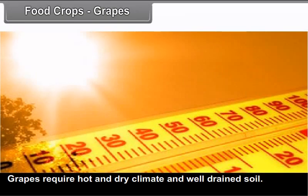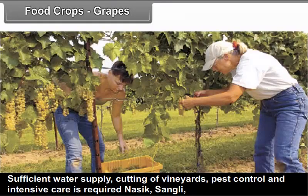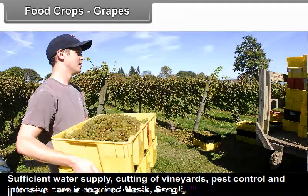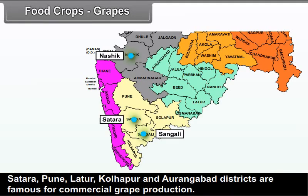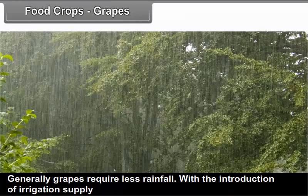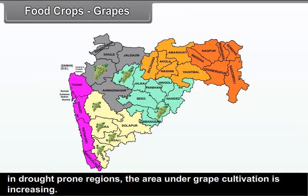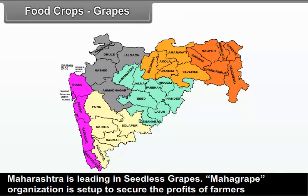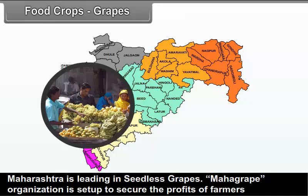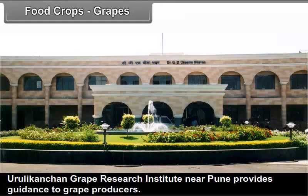Grapes: Grapes require hot and dry climate and well-drained soil. Sufficient water supply, cutting of vineyards, pest control, and intensive care are required. Nashik, Sangli, Satara, Pune, Latur, Kolhapur, and Aurangabad districts are famous for commercial grape production. Grapes generally require less rainfall. With the introduction of irrigation in drought-prone regions, the area under grape cultivation is increasing. Maharashtra is leading in seedless grapes. Mahagrape organization is set up to secure the profits of farmers and boost grape exports. Uruli Kanchan Grape Research Institute near Pune provides guidance to grape producers.